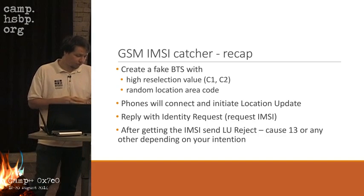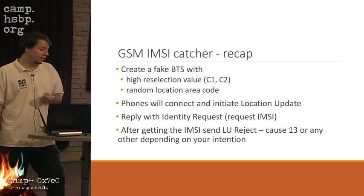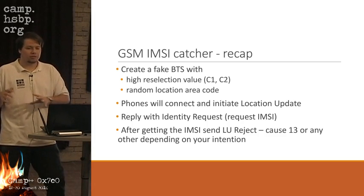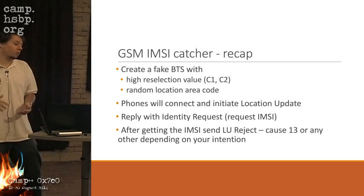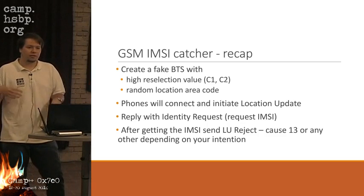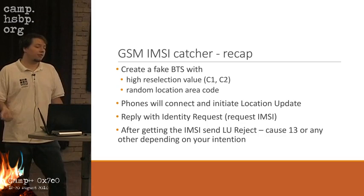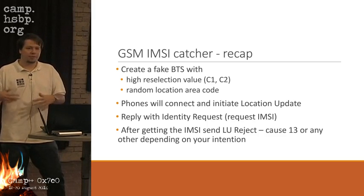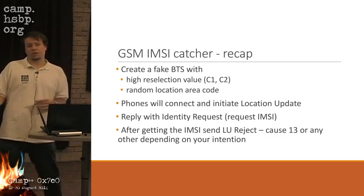In GSM there are special reselection values called C1 and C2, defined in the standard, which determine which base station the phone selects. The phone sees many base stations and these values prioritize them — whichever has the highest value and good signal strength gets selected automatically. We also use a random location area code, because otherwise you wouldn't notice if a phone connects. By using a random LAC, we force the phone to initiate a location update request, which is mandatory in GSM when changing location areas.